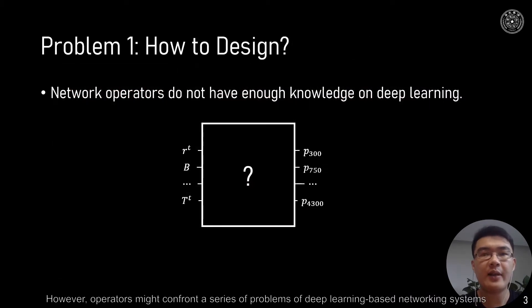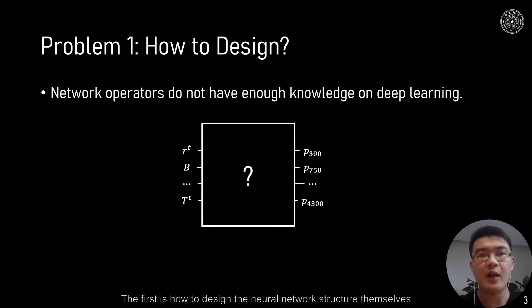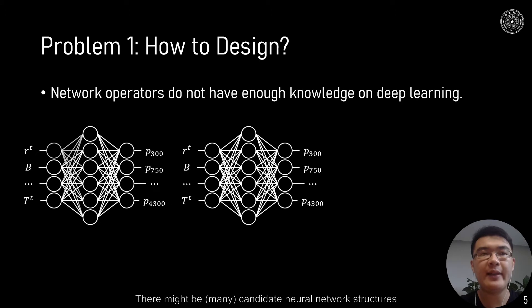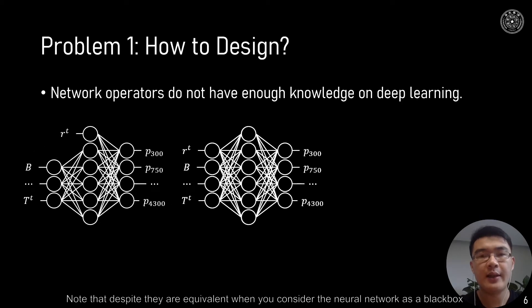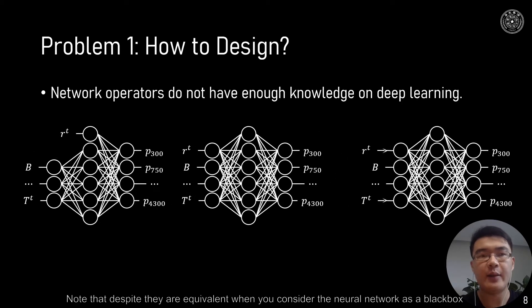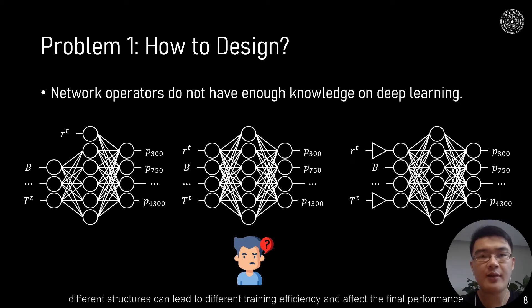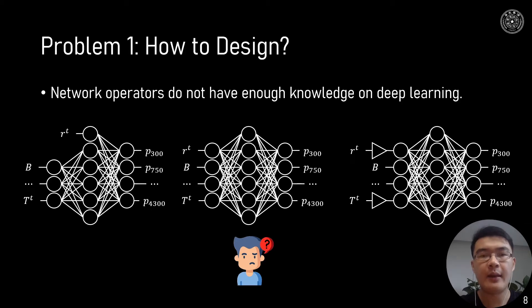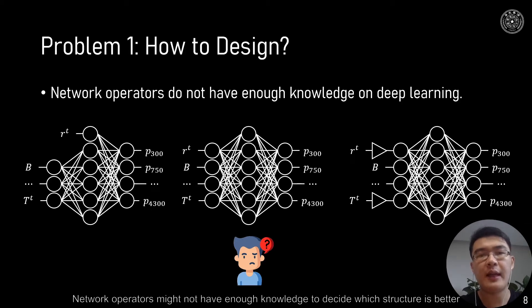However, operators might confront a series of problems with deep learning-based networking systems. The first is how to design the neural network structure with limited knowledge in deep learning. There might be candidate neural network structures, and despite being equivalent when treated as a black box, different structures can lead to different training efficiency and affect final performance. Network operators might not have enough knowledge to decide which structure is better.